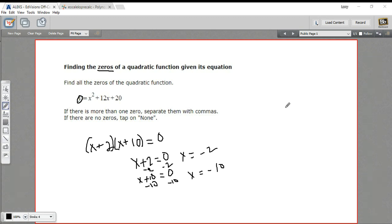If you want to think about this graphically, the zeros of a quadratic function are the places where the graph crosses the x-axis. This is where y is zero, this is where y is zero, negative two, and negative 10. So that is how to find the zeros of a quadratic function.